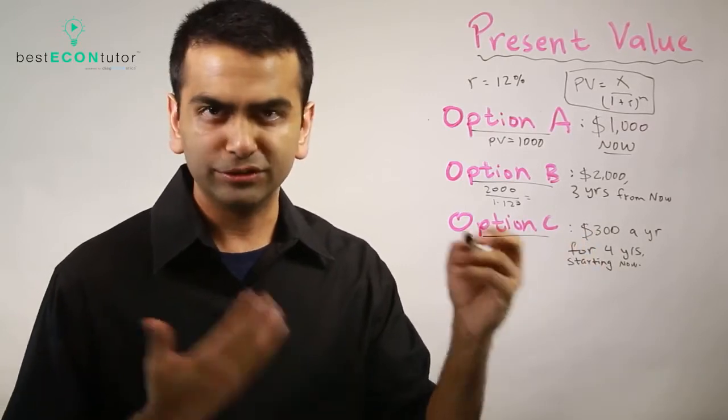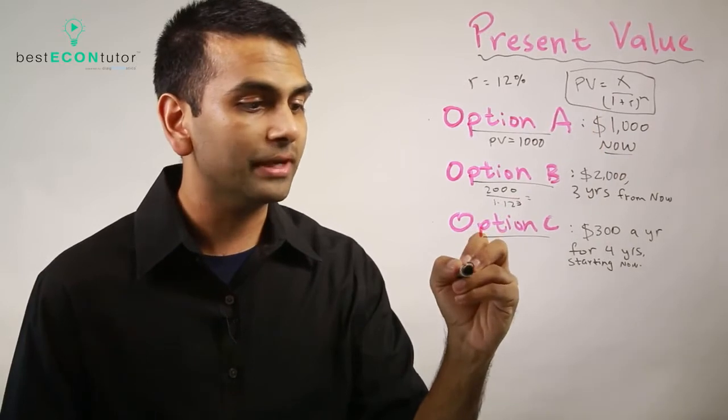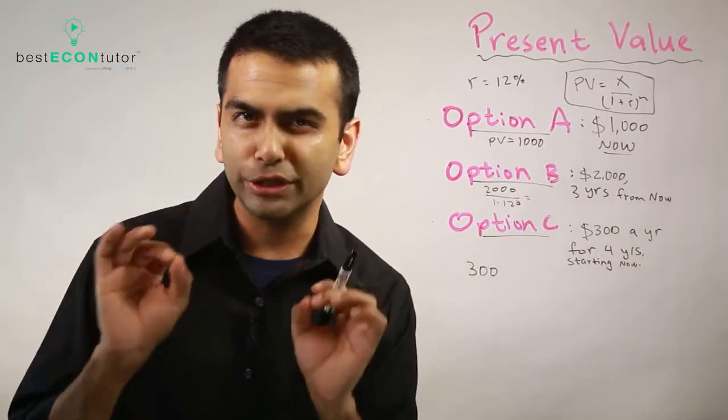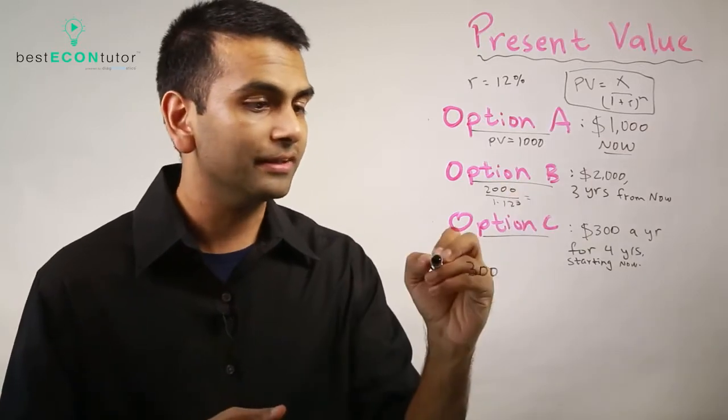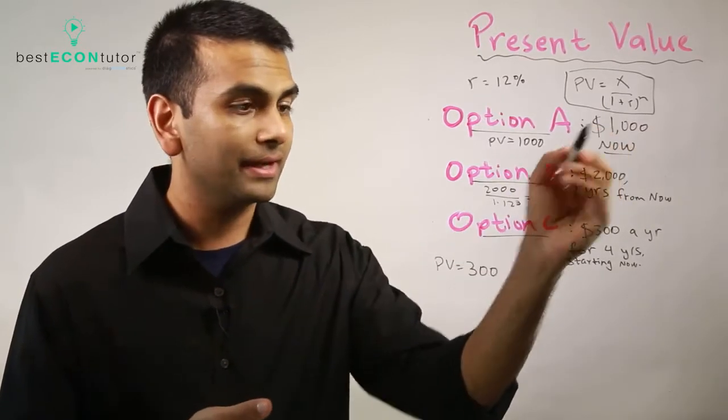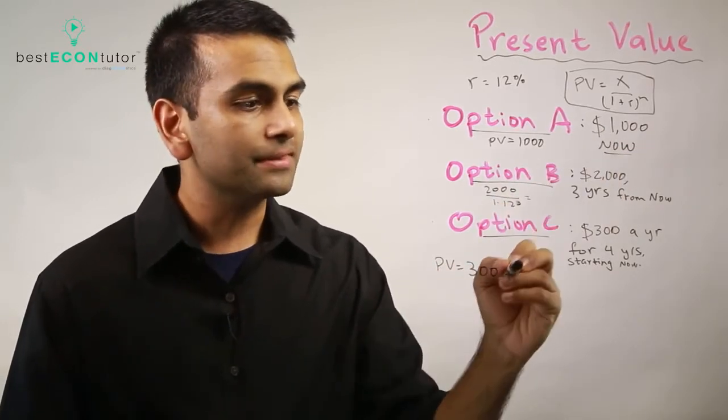you're given three hundred a year starting now for four years. So this is a little bit weird but it's really just an application of this. Let's say you're given three hundred dollars. The first three hundred dollars that you're given is zero years from now, so the present value of that three hundred dollars is just three hundred divided by 1.12 to the zero, so it's just three hundred.